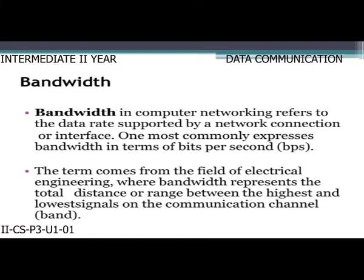Bandwidth in computer networking refers to the data rate supported by a network connection or interface. One most commonly expresses bandwidth in terms of bits per second. The term comes from the field of electrical engineering, where bandwidth represents the total distance or range between the highest and lowest signals on the communication channel or band.